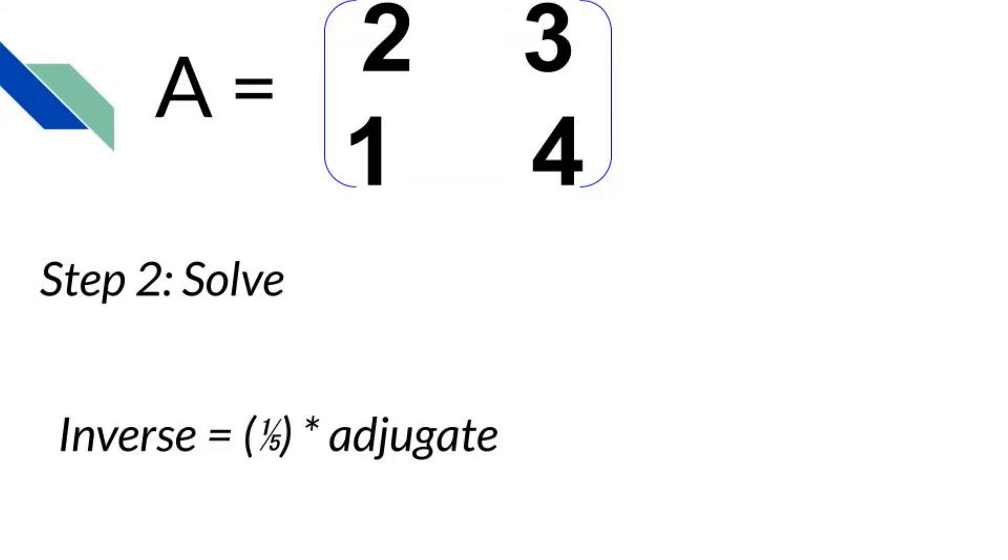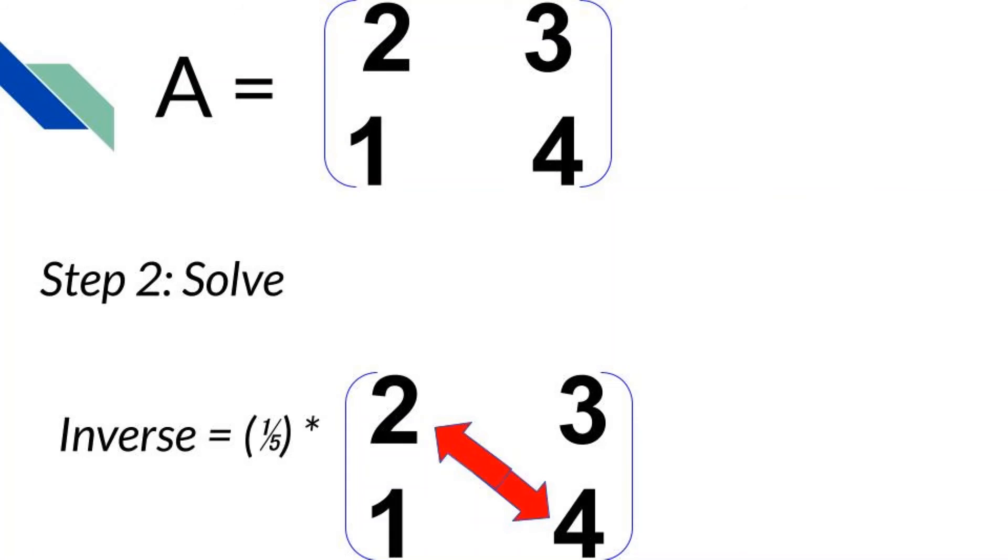Now let's plug in the adjugate. Remember, we are just going criss-cross applesauce again. Swap the first diagonal and negate the second. Now we've got it.